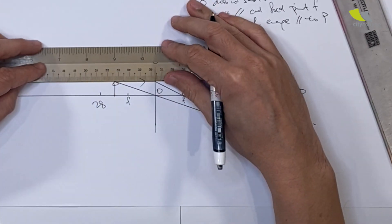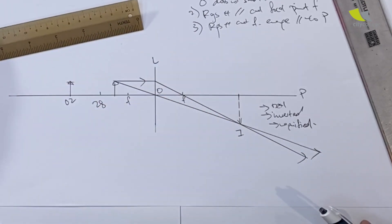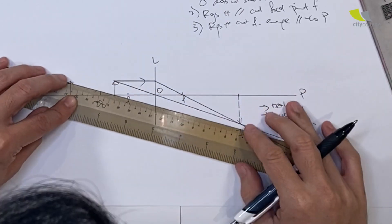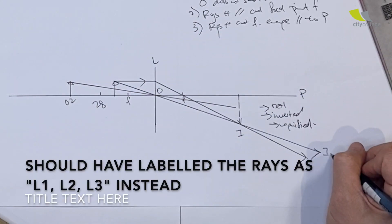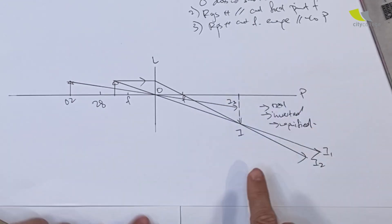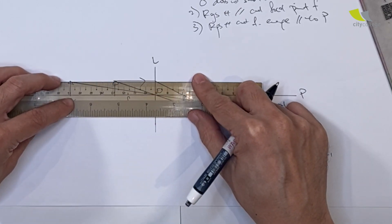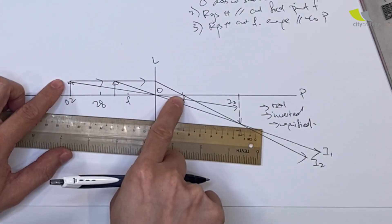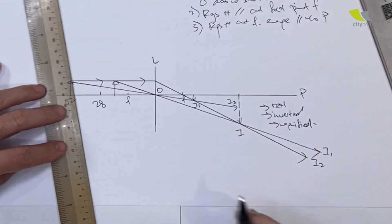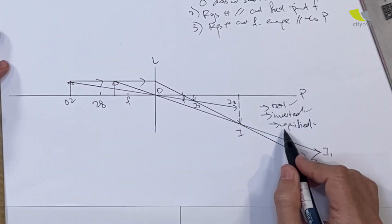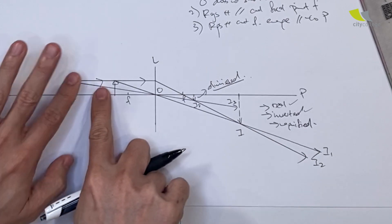If I move the object beyond two focal lengths away, where will my image be? Again, I draw two lines. First is from the top that goes through the optical center - it doesn't bend. I need another ray, which is parallel to the principal axis. I extend this, then it bends and crosses the focal point here. This is my image I2. I2 is real and inverted, but instead of being magnified, it is diminished - smaller.